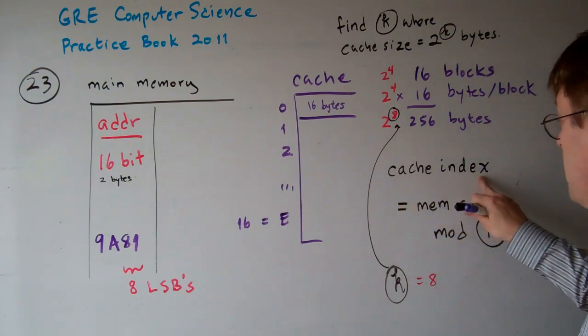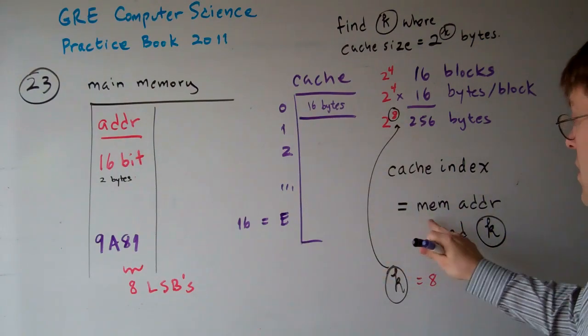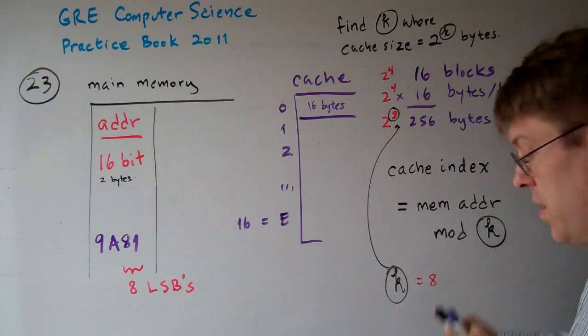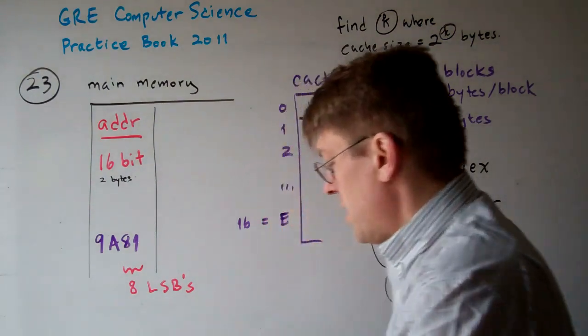So the cache index equals the memory address mod k. Well, what's that going to be?